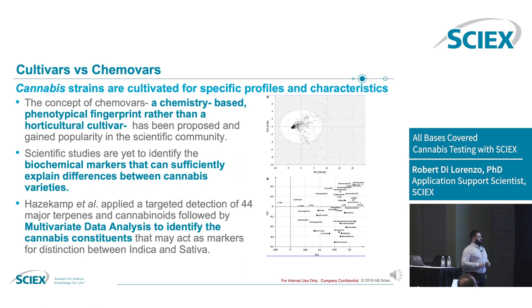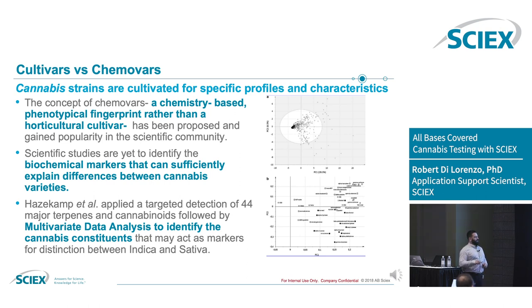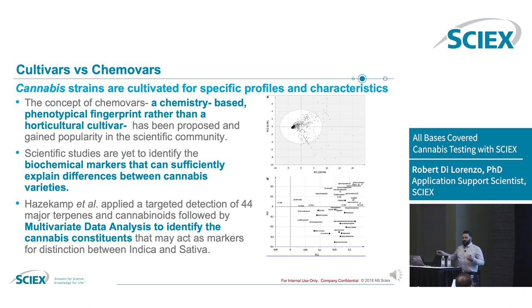Biochemical markers can explain differences really nicely in cannabis varieties. A paper came out a couple of years ago that did a targeted detection of 44 terpenes and cannabinoids, plotted them in PCA space, and used multivariate data to differentiate between strains. Not just this grower saying 'I have the greatest OG Kush' — we can actually measure what they express, not what the genotype is.